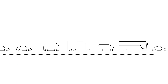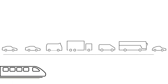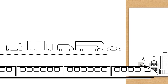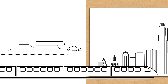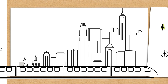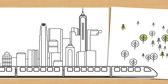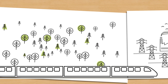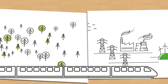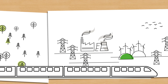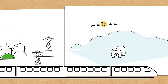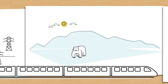SEA also improves transparency and public trust in decision-making. It helps countries to promote economic development and, at the same time, to pursue green economy targets and environmental objectives such as protecting biodiversity, increasing energy efficiency and mitigating or adapting to climate change.